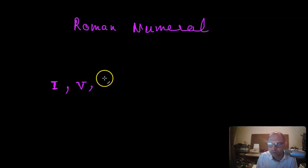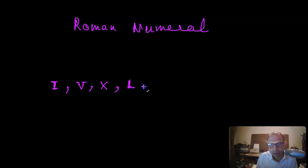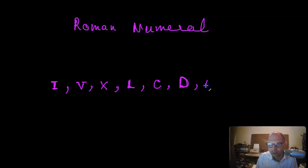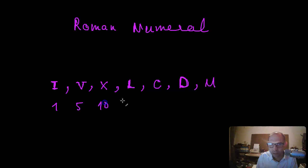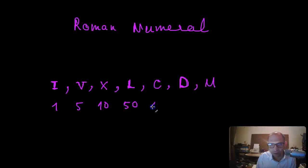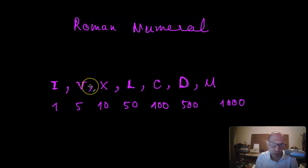In the Roman numeral system: I is one, V is five, X is ten, L is fifty, C is one hundred, D is five hundred, and M is one thousand. You add and subtract these from one another — it is not a positional number system.